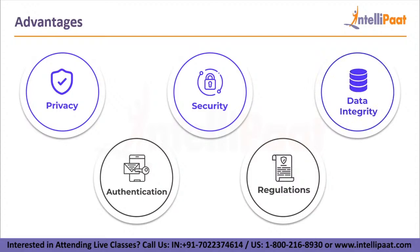Next, we have data integrity. Encryption also aids in the prevention of harmful activities such as on-path attacks. When data is sent over the internet, encryption, together with additional integrity safeguards, ensures that the data received by the recipient has not been tampered with along the way. Next, we have authentication. Public key encryption can be used to prove that the owner of a website holds the private key mentioned in the website's TLS certificate, among other things — ensuring that users are linked to the correct website. Lastly, we have regulations. Many industry and government standards require organizations that handle user data to keep the data encrypted for all of these reasons.